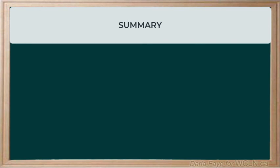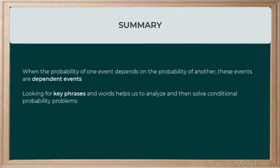Let's wrap up by doing a quick little summary. In this video, we determined that if the probability of one event depends on the probability of another event, then we describe those events as being dependent. By looking for key phrases, we can better analyze the situations in which dependent events are involved, and that will help us use our new equation to solve problems.